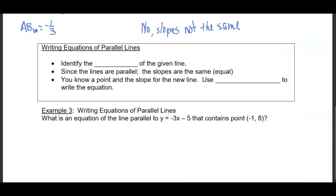When we write the equations of parallel lines, we first have to identify the slope of the given line. Because the lines are parallel, you know that the slopes are going to be the same, or equal. You also know a point and the slope for the line, so use point-slope form to write the equation.